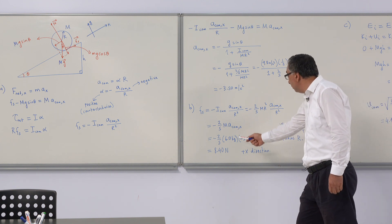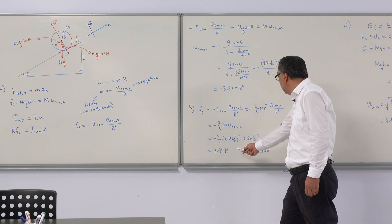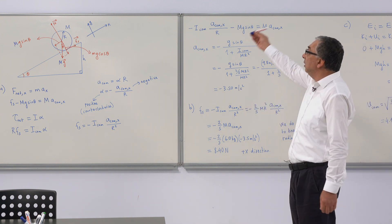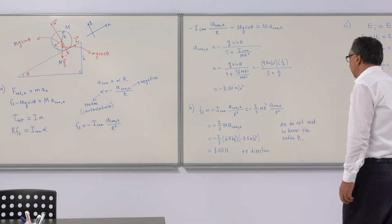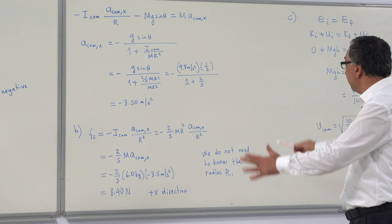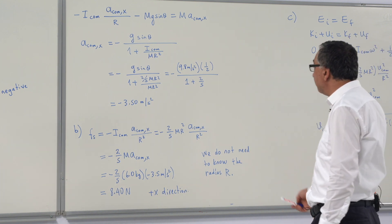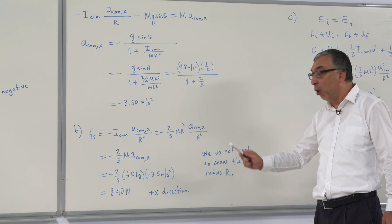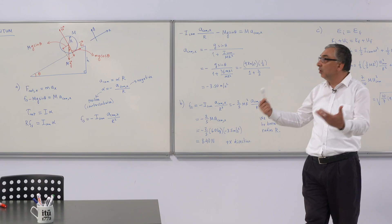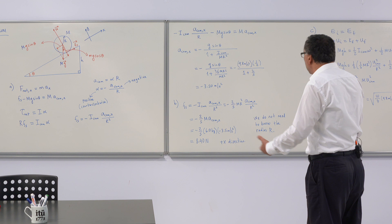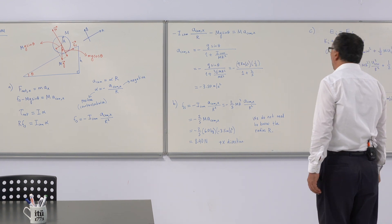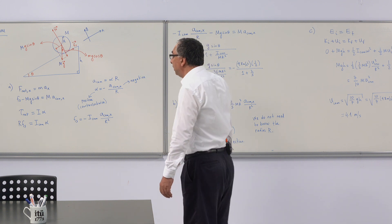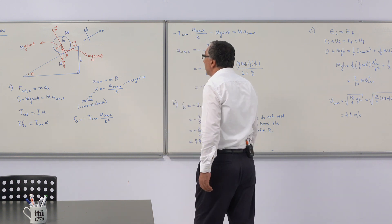The static frictional force equals 8.4 newtons and it is in the positive x-direction. Notably, all these equations are independent of the radius of the ball, so we do not need to know the value of the radius.